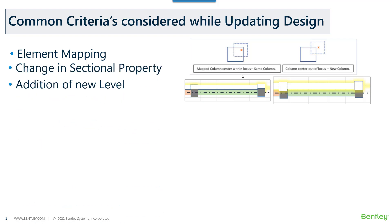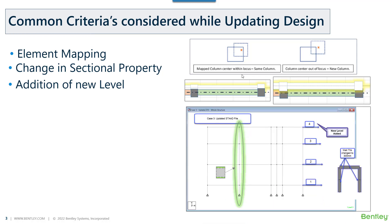Other changes that are considered include section property changes — if the size of a column or beam has changed, a new design will be performed. If a new level has been added, design for elements on the new level will be performed and existing member designs will be checked. The program captures all these different changes from the analysis file, brings them to you, and based on the type of change in the revised analysis model, the appropriate design steps are taken.